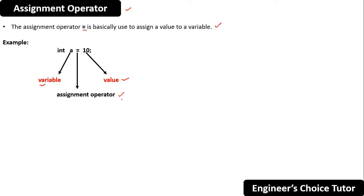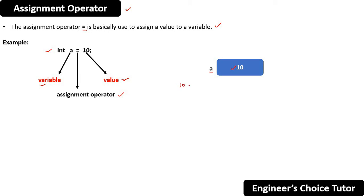What is happening behind the scene? Because of this line int a is equal to 10, a memory is allocated and the memory name is 'a'. And inside this, what is going to be stored? This 10 is going to be stored. That is why if you try to print this 'a' with the help of System.out.println(a) you will get 10, because this 10 value is assigned to or stored to this 'a' variable.